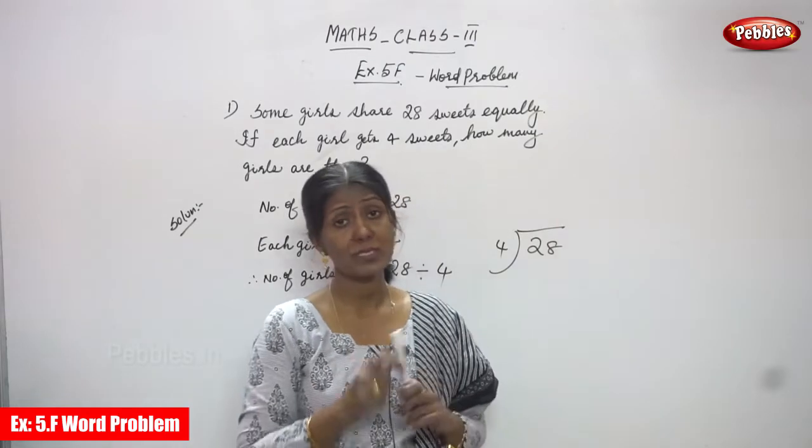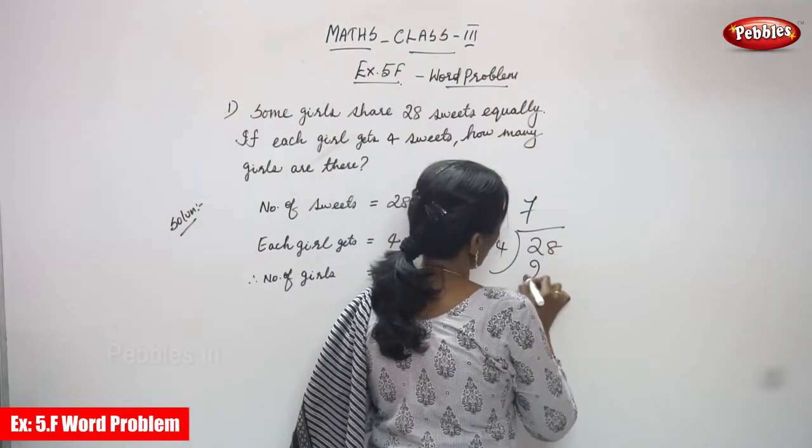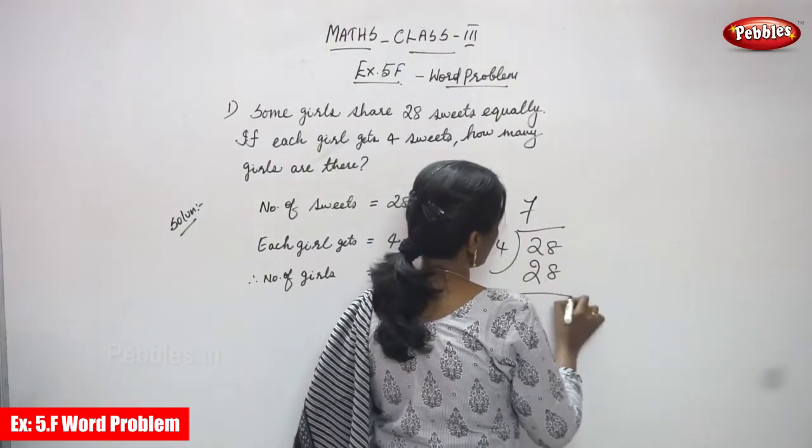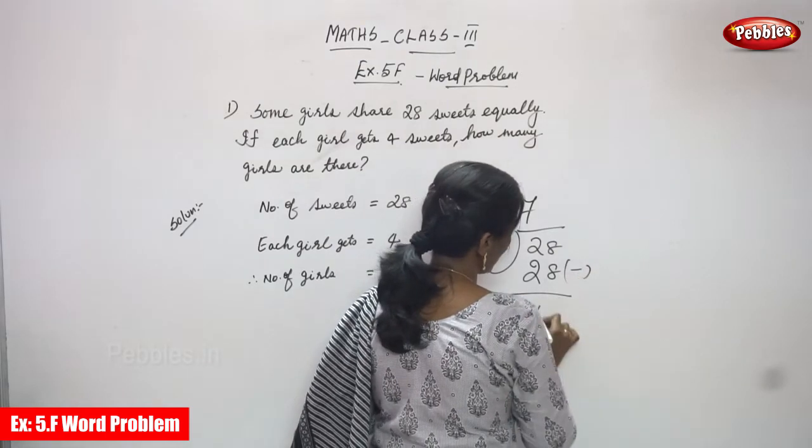You must know your tables. That is very important. So 4 sevens are 28, so you must write it on the top—it's the quotient. 28 minus 28, you can get zero. Zero is the remainder, and this is the quotient.